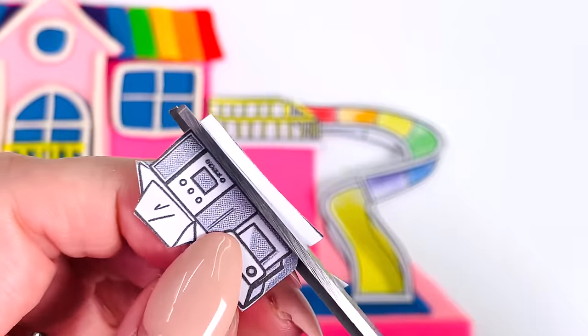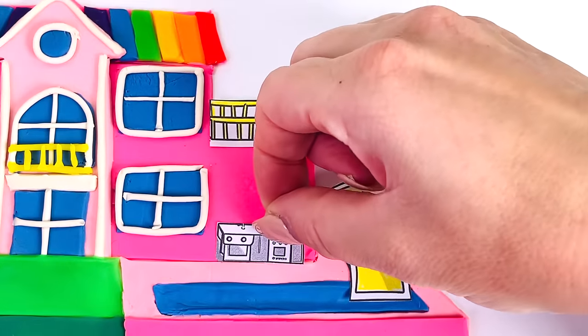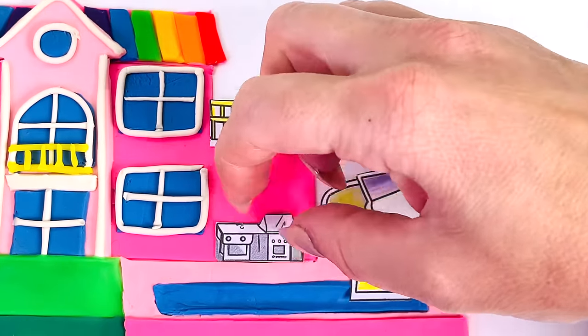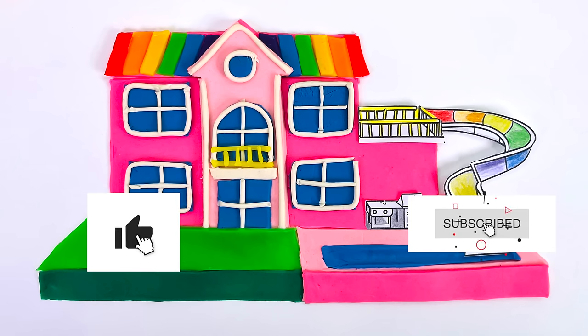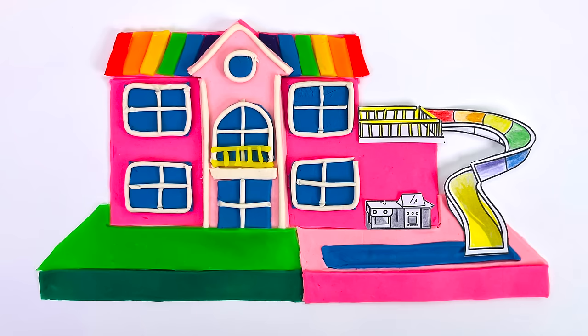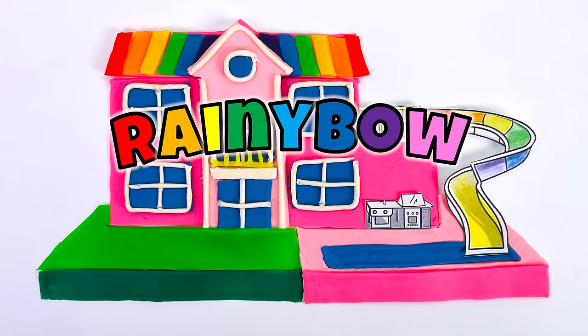All I need to do now is cut out the picture of my barbecue and place it right here next to the pool. Wow, we made an entire house out of Play-Doh and paper with coloring pencils. Thanks for watching and see you next time on Rainy Bowl.